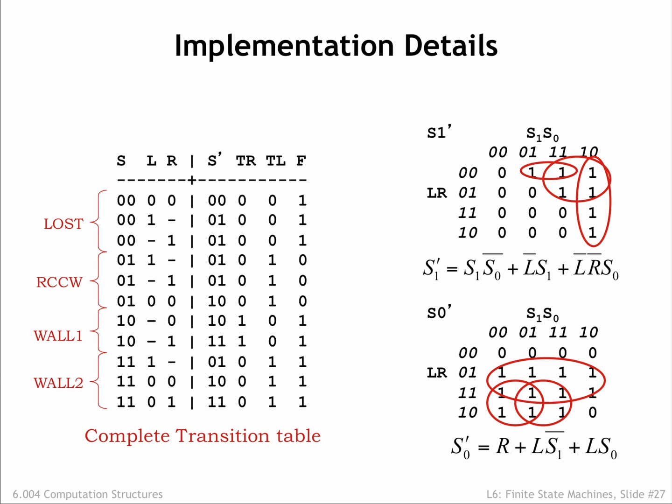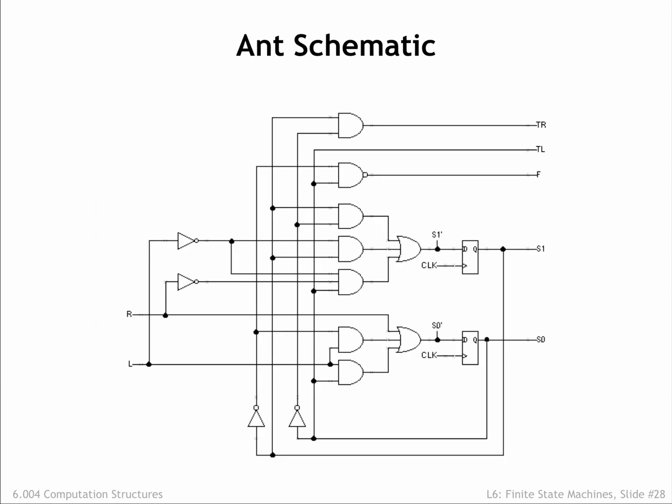We can follow a similar process to derive minimal sum of products expressions for the motion control outputs. Implementing each sum of products in a straightforward fashion with AND and OR gates, we get the following schematic for the ANT brain. Pretty neat! Who knew that maze-following behavior could be implemented with a couple of D registers and a handful of logic gates?